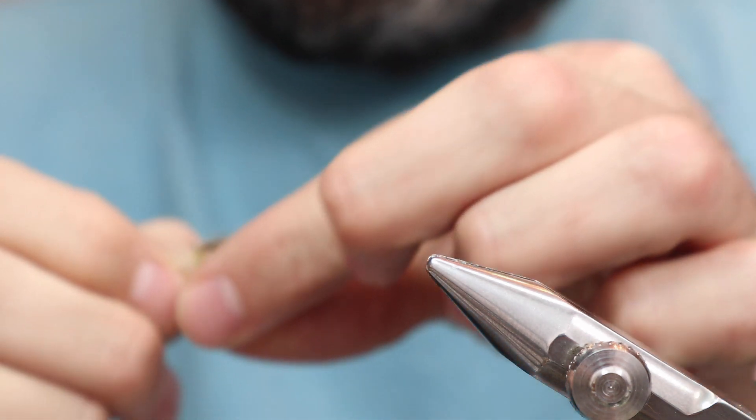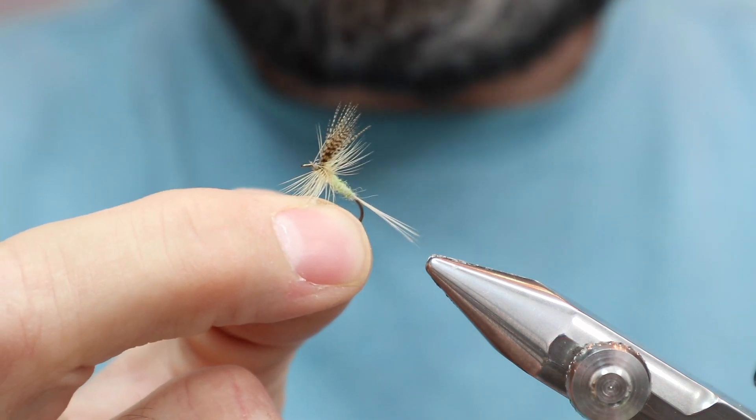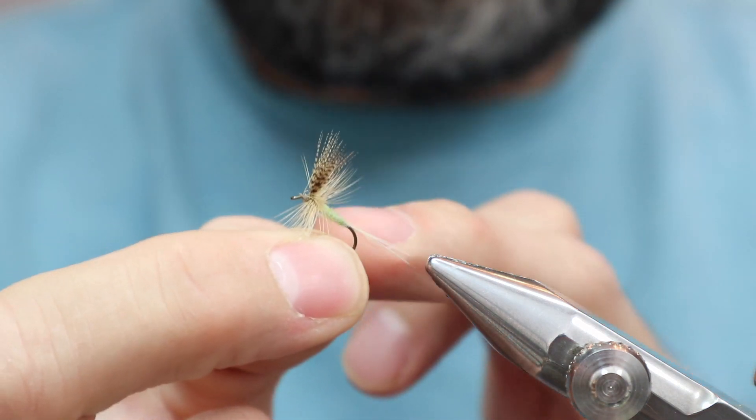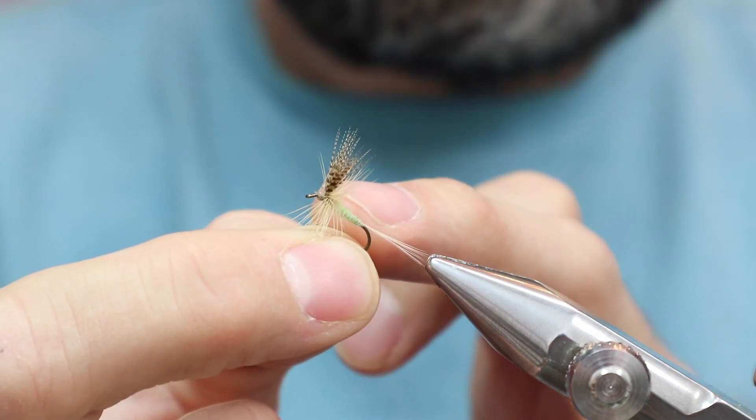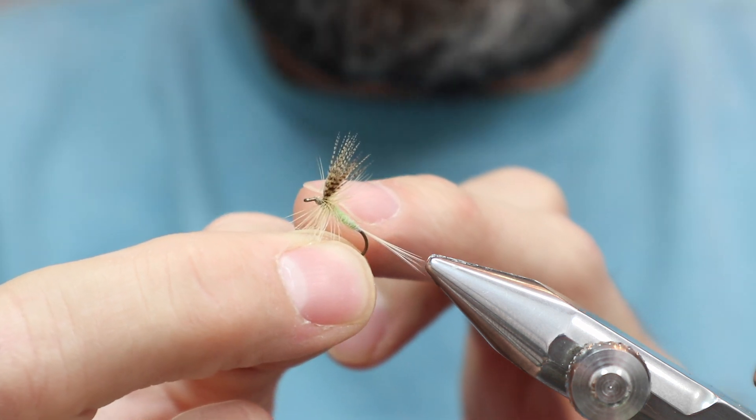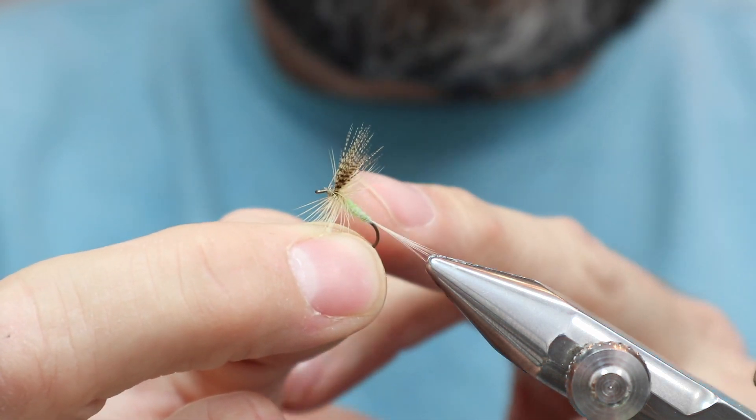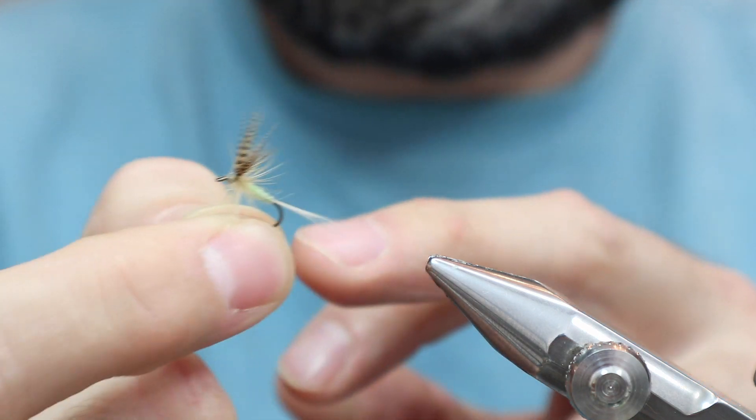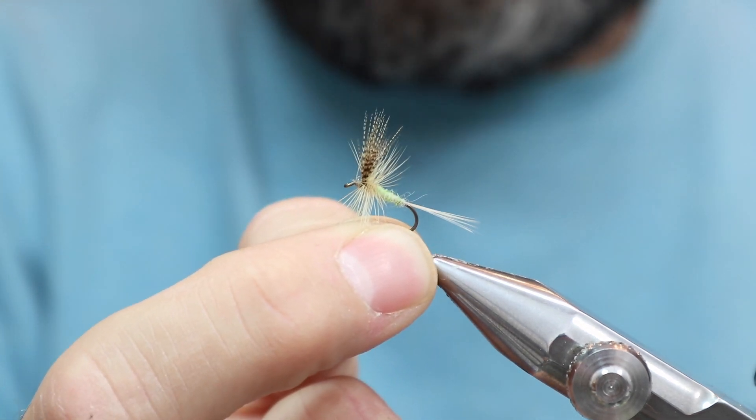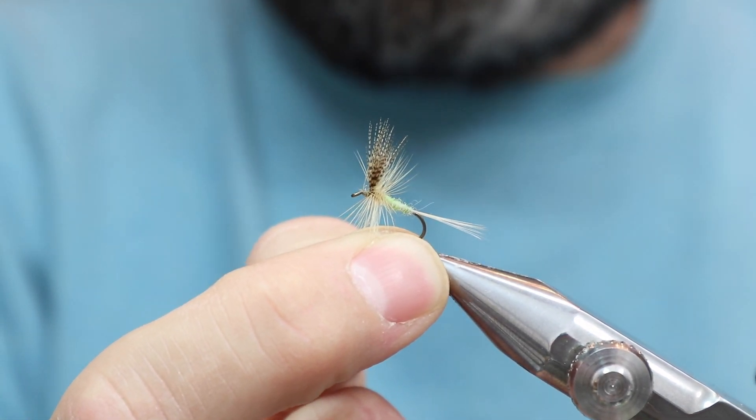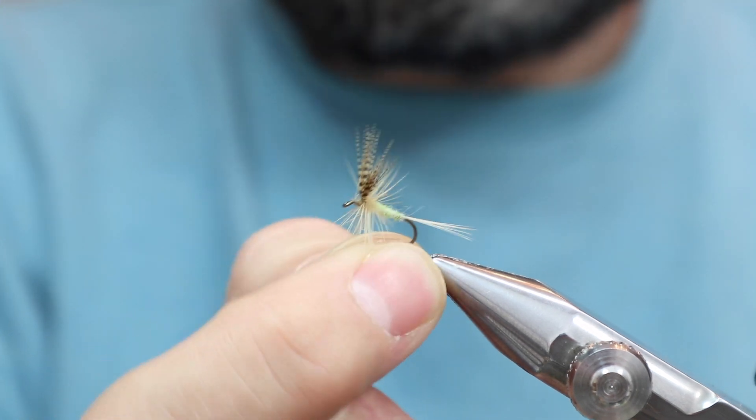Now this one, this is an interesting one. This is John, this is a Davidson Special. Now it might be tough to see on camera, but this body has like a green, like a white or a green, like a mixture in there, like a cream and a green. It's a really interesting fly. It's about the same size as the Red Fox too, about a number 14.